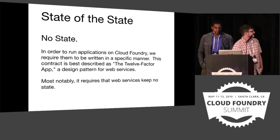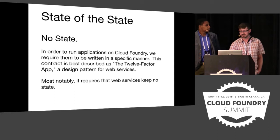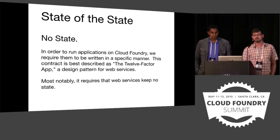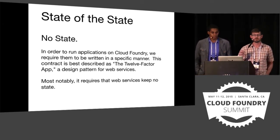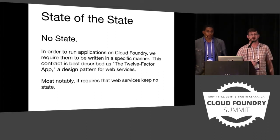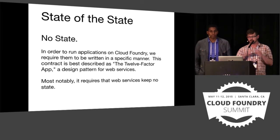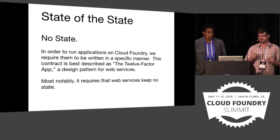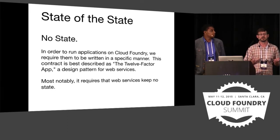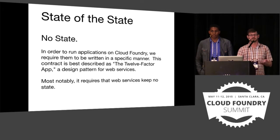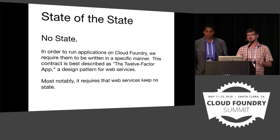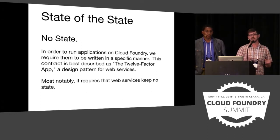To kick things off, let's talk about the current state of what you can run on Cloud Foundry. Currently, we only allow you to directly run what we call elastic compute nodes — basically stateless web processes. The best way to codify what those are allowed to do was stated in the 12-factor web app manifesto, which describes the contract between the developer and the platform when running these stateless services.